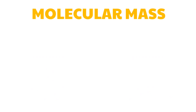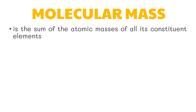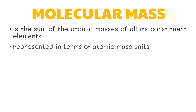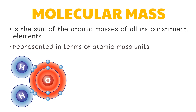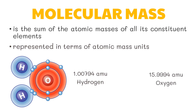The molecular mass of an element is the sum of the atomic masses of all its constituent elements, also represented in atomic mass units. For example, the molecular mass of water equals the sum of its constituents: two hydrogen atoms and one oxygen atom. Multiplying hydrogen's atomic mass (1.00794 amu) by two and adding oxygen's (15.9994 amu) gives a molecular mass of 18.0154 atomic mass units for H₂O.